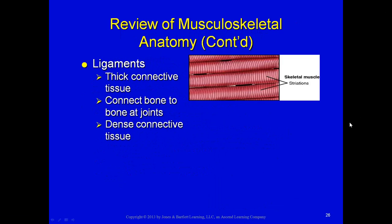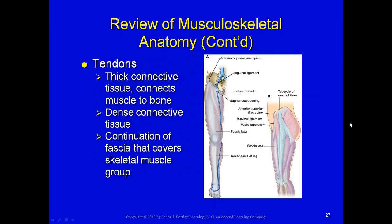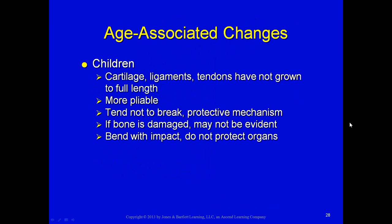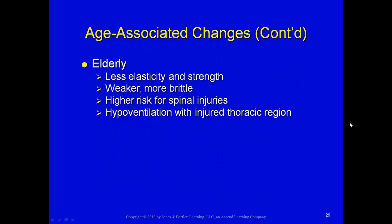Ligaments are thick, dense connective tissue connecting bone to bone at joints — very strong but can tear when stretched beyond a normal position. Tendons are thick connective tissue connecting muscle to bone; they are a continuation of the fascia covering the skeletal muscle group and can also be torn. Age-associated changes: children's cartilage, ligaments, and tendons have not grown to full length — they are more pliable and tend not to break, but if the bone is damaged it may not be evident. They bend with impact and don't do as well protecting organs. In elderly patients, bones are not as strong.